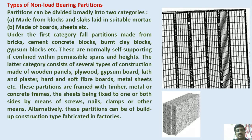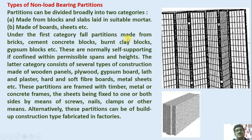Let us have a glance at the various types of partition walls. The partitions can be divided broadly into two categories: those made from blocks and slabs laid in suitable mortar, and those made of boards, sheets, etc. Under the first category fall partitions made from bricks, cement concrete blocks, burnt clay bricks, and gypsum blocks. These are normally self-supporting if combined with permissible spans and heights.